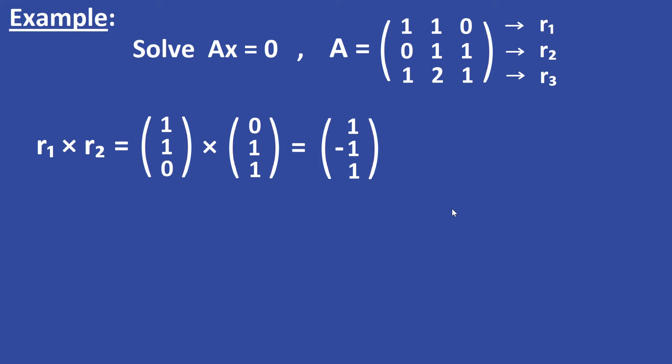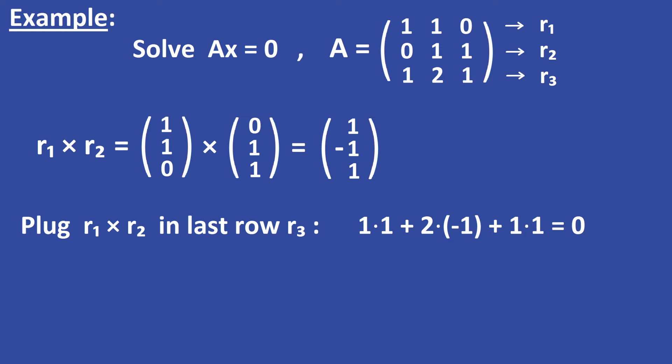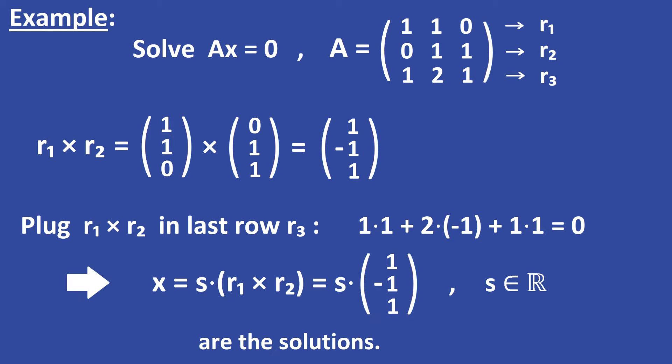Now we plug the cross product vector into the last row of the matrix. So we get 1 times 1, plus 2 times minus 1, plus 1 times 1, and this is equal to 0. So the solutions x of the system are given by S times (R1 cross R2), which equals S times (1, -1, 1), where S is a real number.